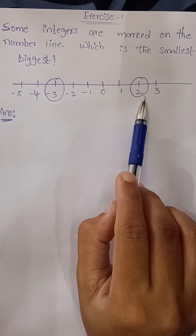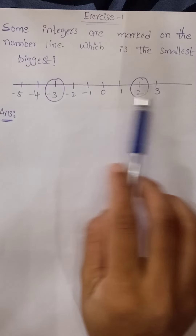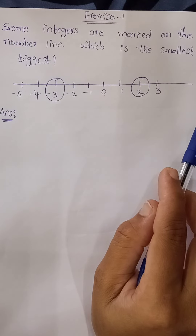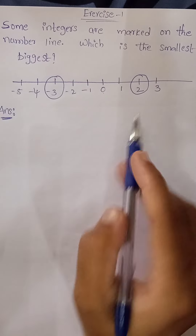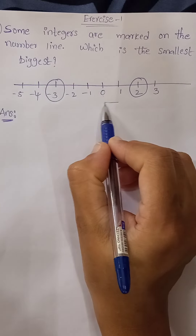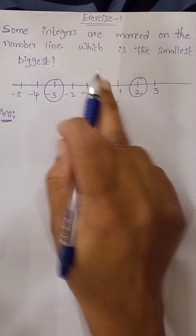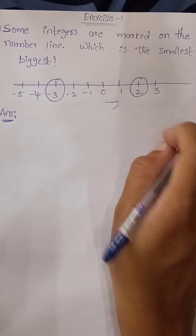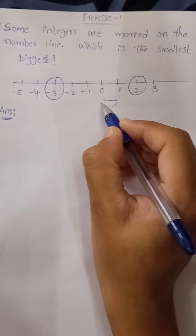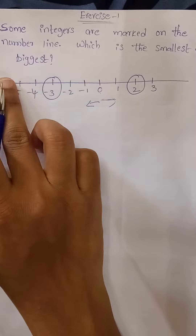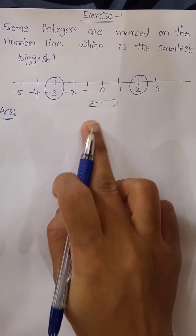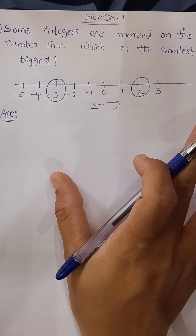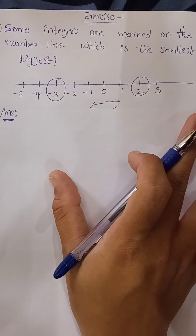If you move to the right side on this number line, the value will always increase. If you go to the left side on this number line, the value will always decrease. So let's see what the question is for us.